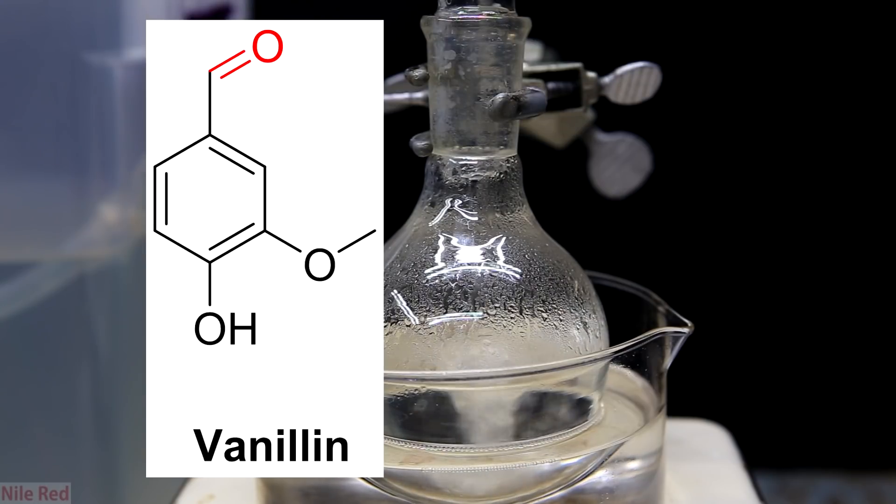Okay so now to move on to the mechanism and I don't really want to go into too much detail but I'll give the general overview. So you can see here highlighted in red is the aldehyde of the vanillin. The most important aspect of the aldehyde is the carbon oxygen double bond. Oxygen is a lot more electronegative than carbon and it likes to pull and hold on to electrons a lot more.